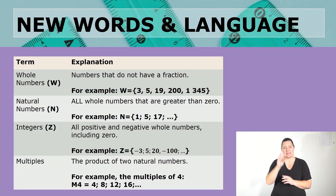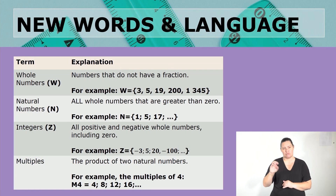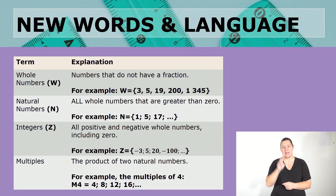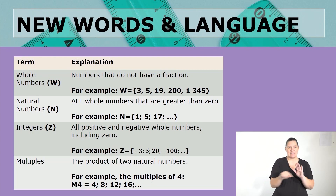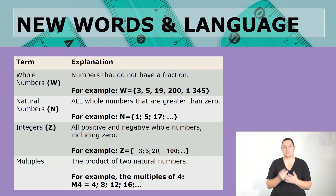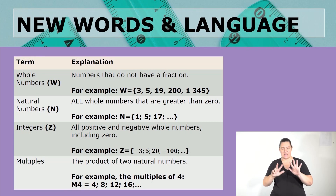Whole numbers, symbol W, are numbers that do not have a fraction — for example 3, 5, 19, 200, or 1345. Natural numbers, symbol N, are all whole numbers greater than zero — for example 1, 5, 17. Integers, symbol Z, are all positive and negative whole numbers including zero — for example negative 3, 5, 20, negative 100. Multiples are the product of two natural numbers; for example the multiples of 4, written M(4), are 4, 8, 12, 16, and so on.